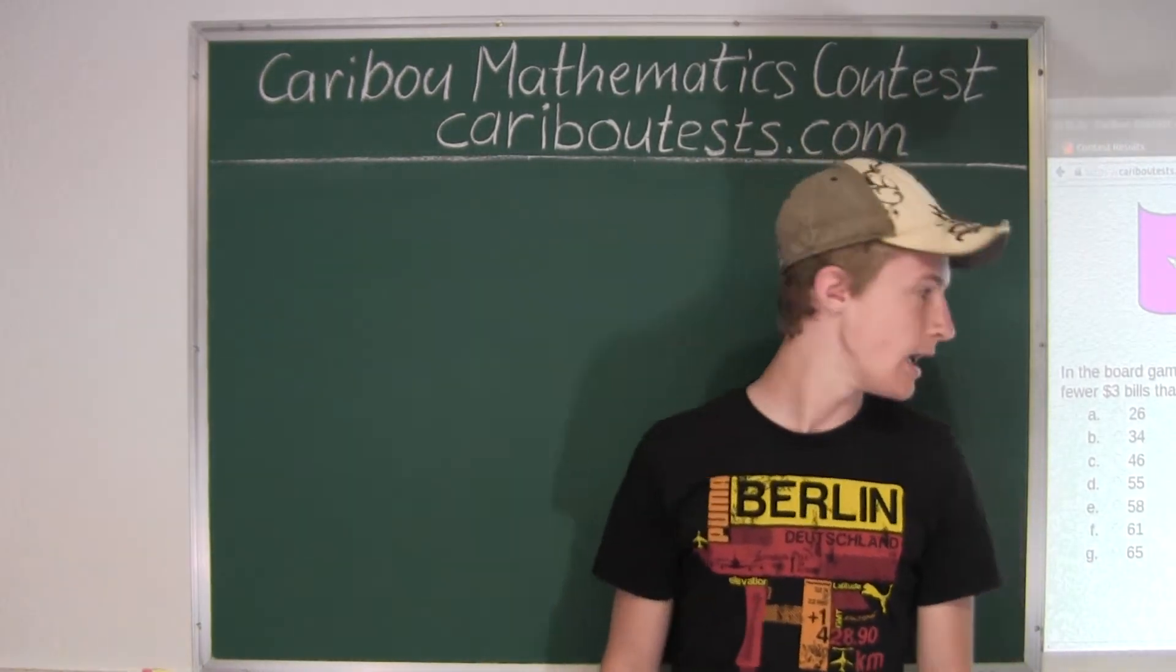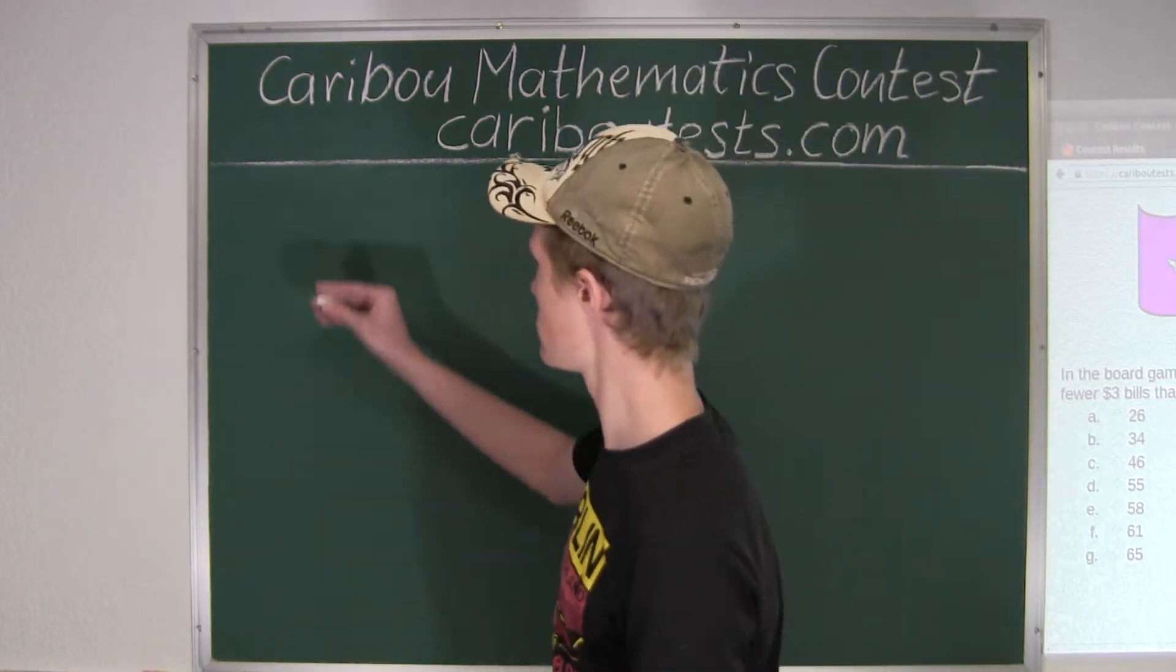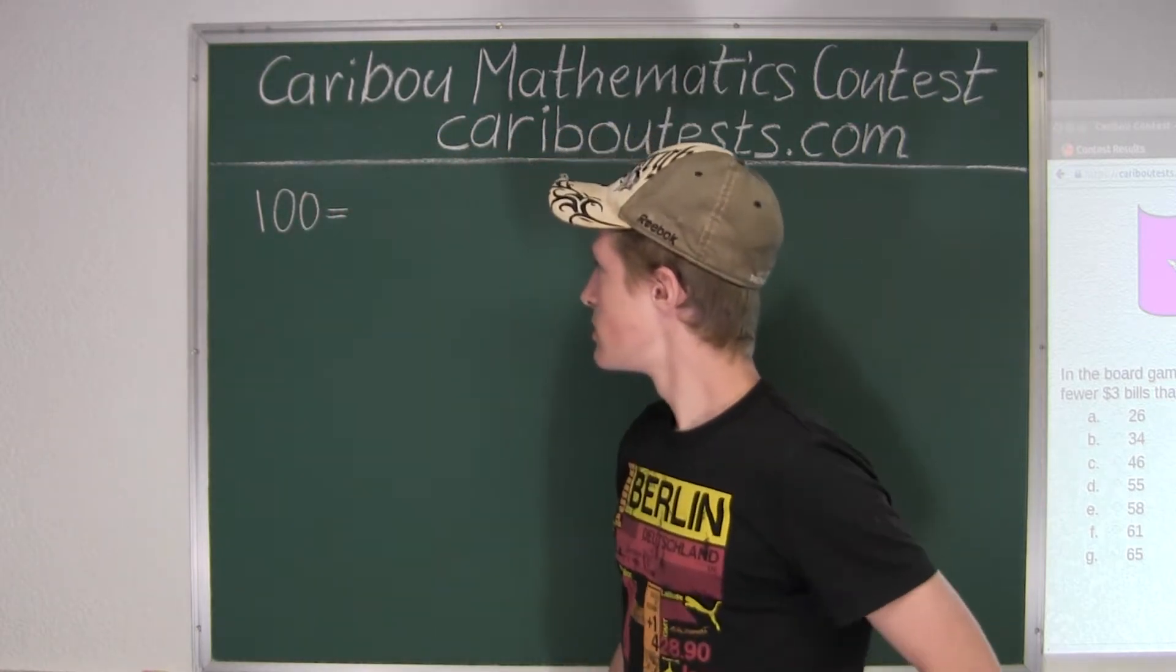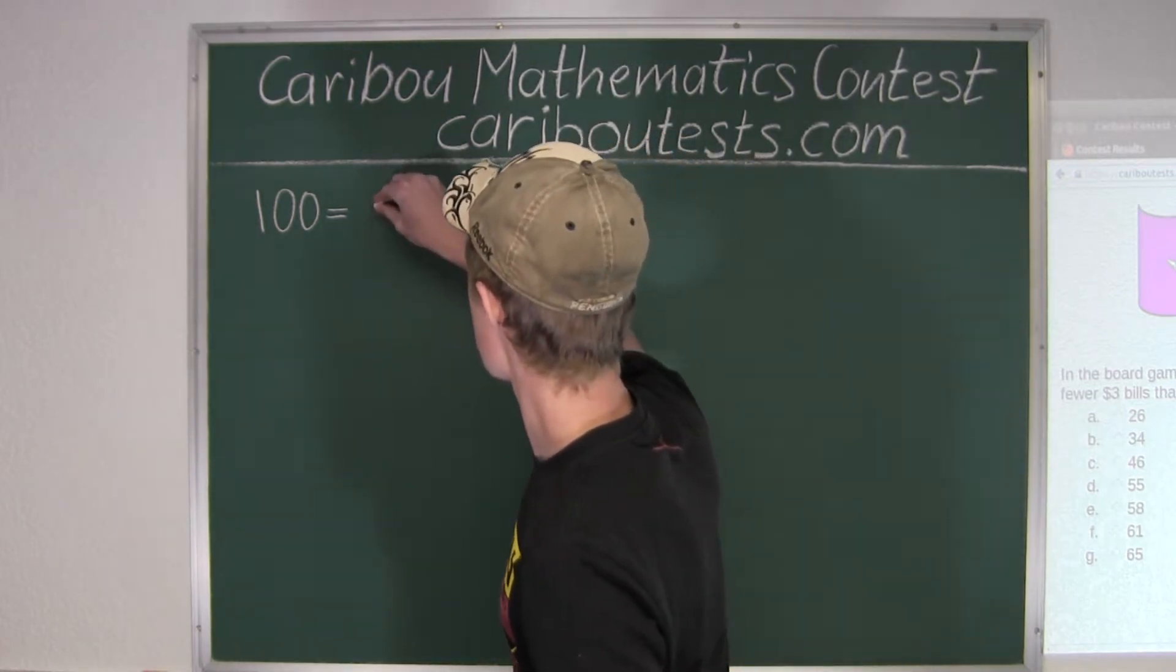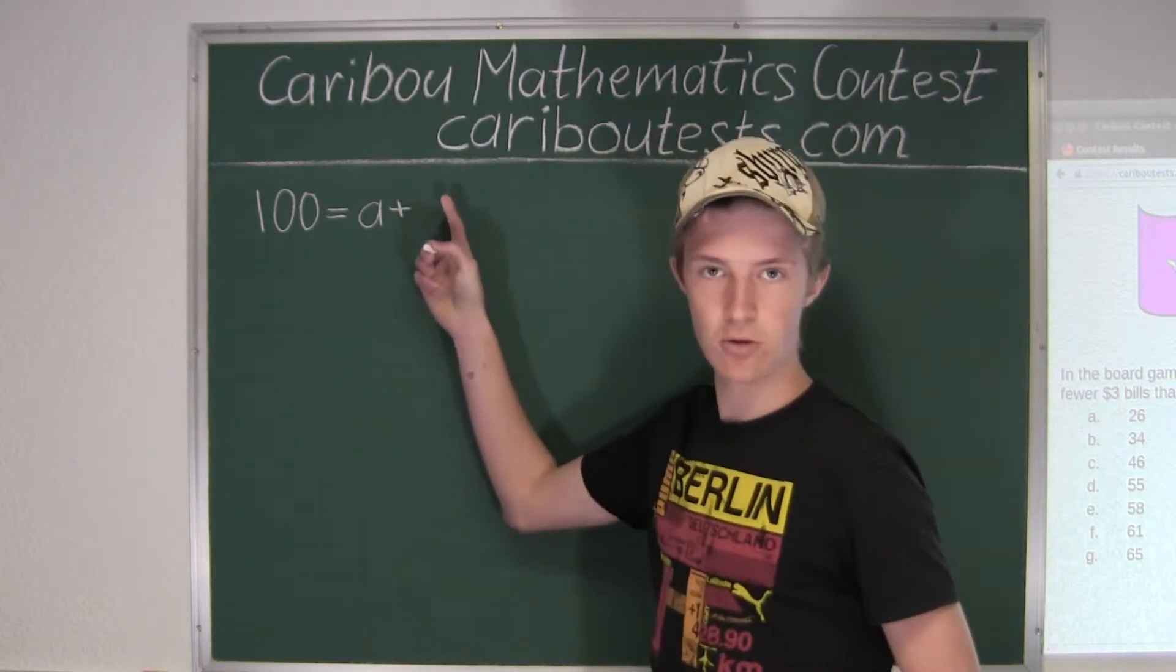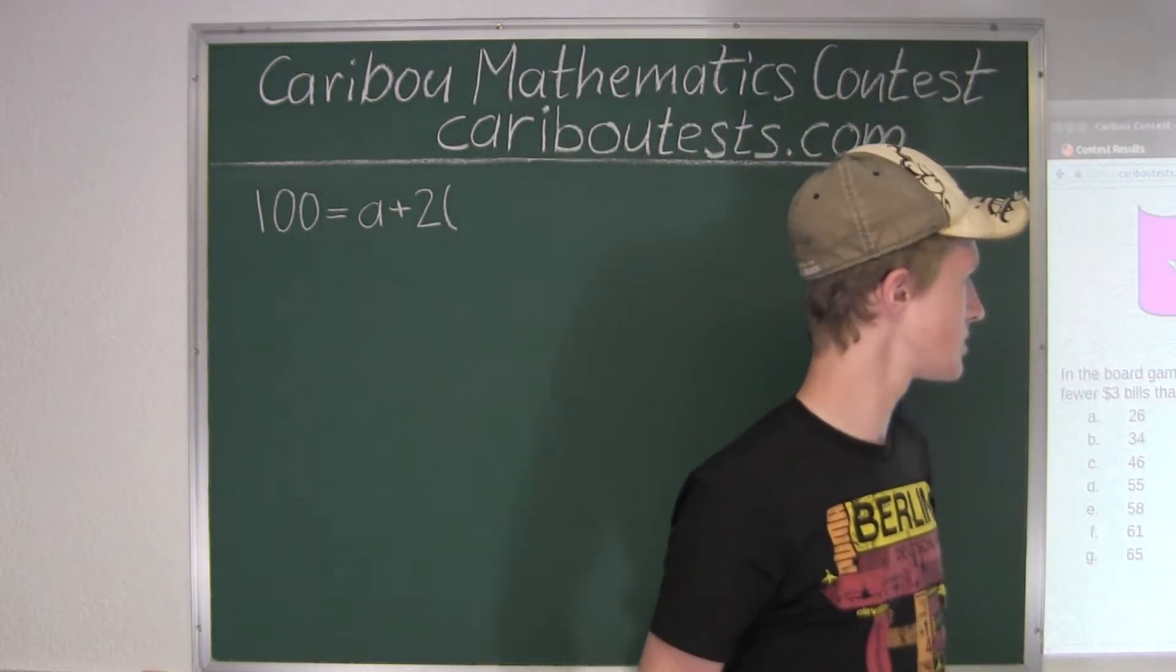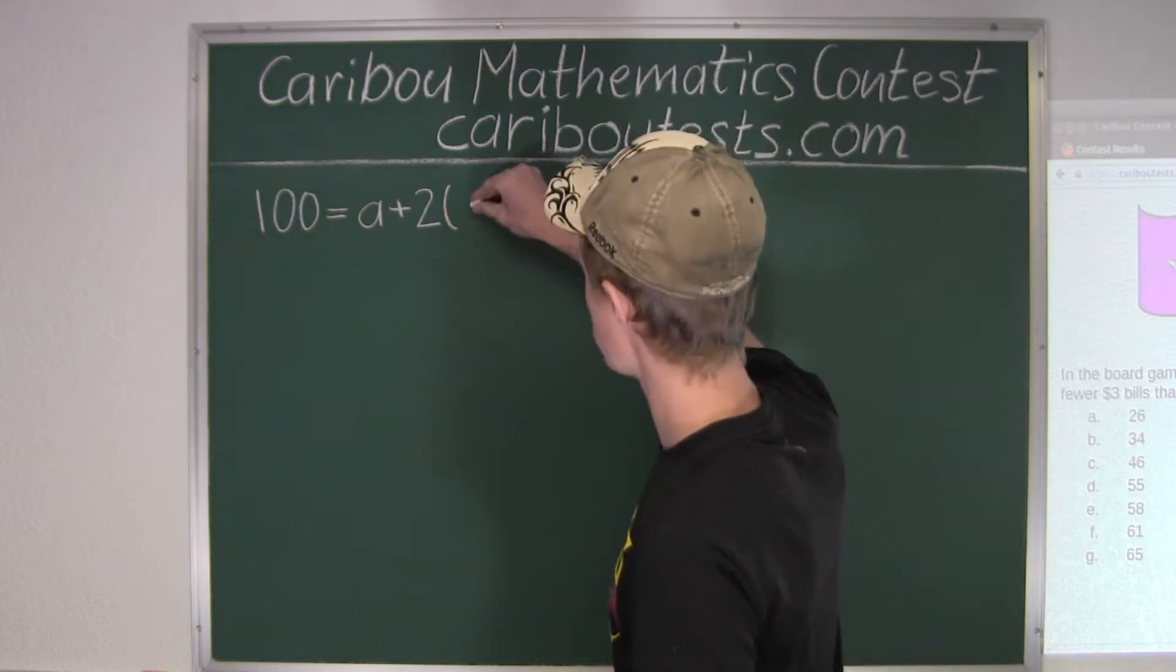We know that the total value of all bills is $100. So we have $1 times A, so that's just A. Now since it's the $2 bills, we have plus 2 times, and in brackets, from the question it says there are 11 more $2 bills than $1 bills, so A plus 11.